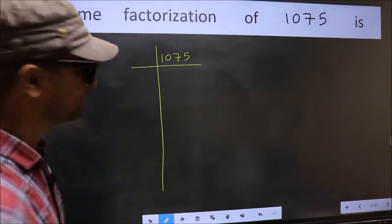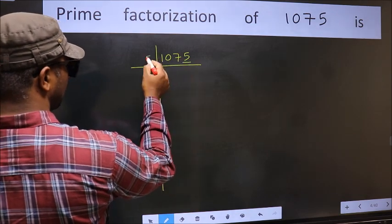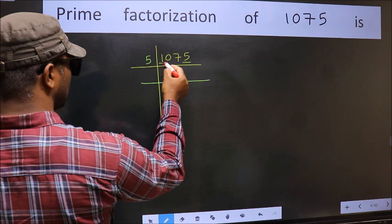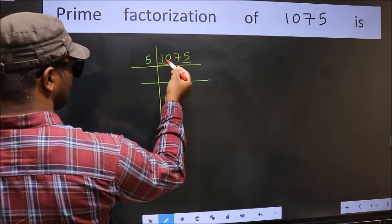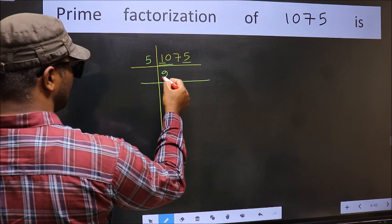Next, for this number, last digit is 5, so directly take 5. First number 1 is smaller than 5, so take 2 numbers, 10. When do we get 10 in 5 table? 5 times 2 is 10.